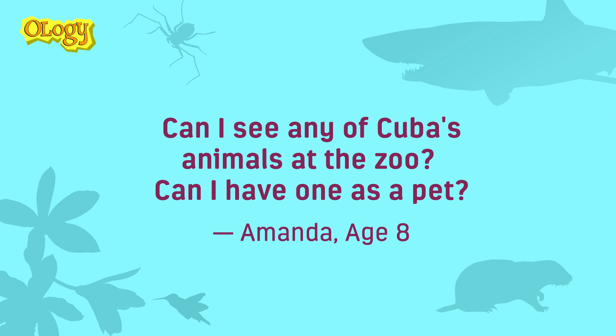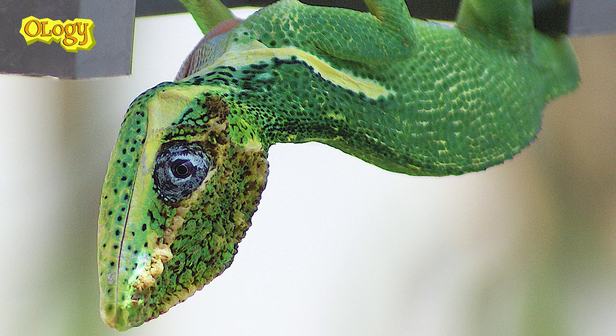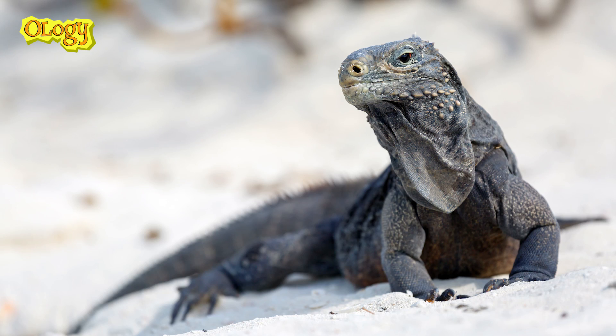Can I see any of Cuba's animals at the zoo? Can I have one as a pet? Cuba has many unique and interesting species of lizards and frogs. Many of them you can see in zoos — for example, you might be able to find a Cuban night anole, a type of lizard, Cuban tree frogs, or Cuban rock iguanas. These could make good pets, but you always have to check to make sure they're allowed in the country where you live, because they're exotic and not native to that country.